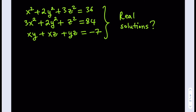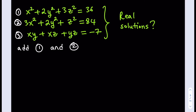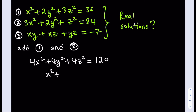I'm going to number the equations to make it easier to refer to them — call this one number 1, this one number 2, and this one number 3. I'm going to add equations 1 and 2. When I add those two equations, I get 4x squared plus 4y squared plus 4z squared equal to 36 plus 84, which is 120. Dividing both sides by 4 gives x squared plus y squared plus z squared equals 30. Let's call this equation 4.